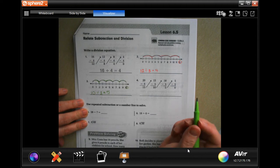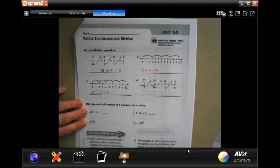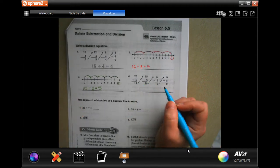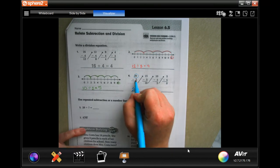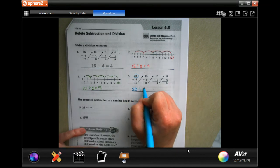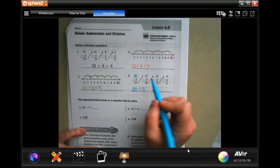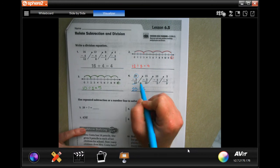On this one, we are starting with 20. We are counting down by fives, dividing by five, and there are one, two, three, four of those.